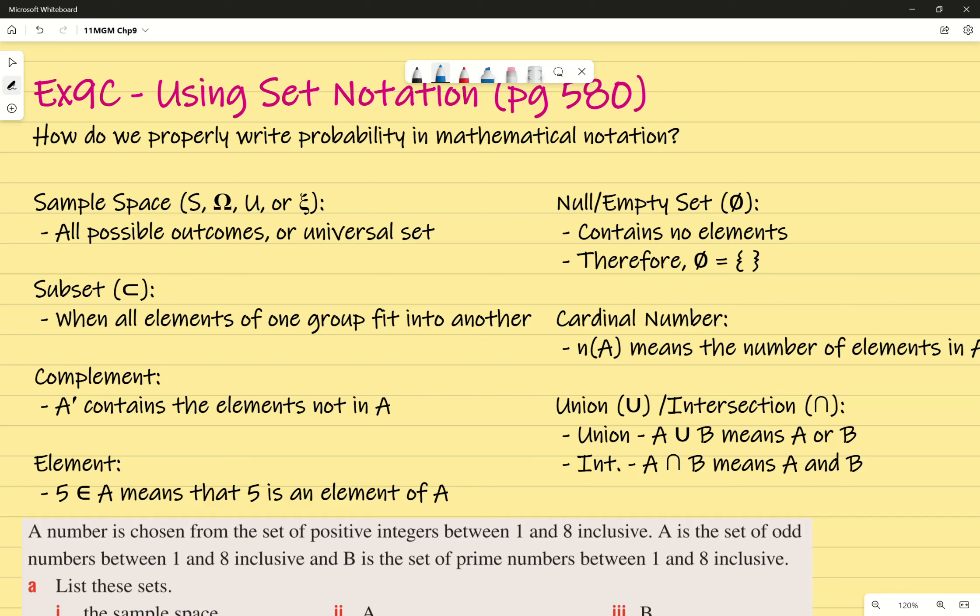So there are a couple of definitions I'd like to go over. First thing is sample space, you guys already know. I've included the definitions for these. Sample space is all possible outcomes, or something we might call the universal set, and is symbolized by S, omega, which is that Q-looking thing, the capital U or the big U, and then a squiggly line. All you need to know is, if you see that, it means sample space.